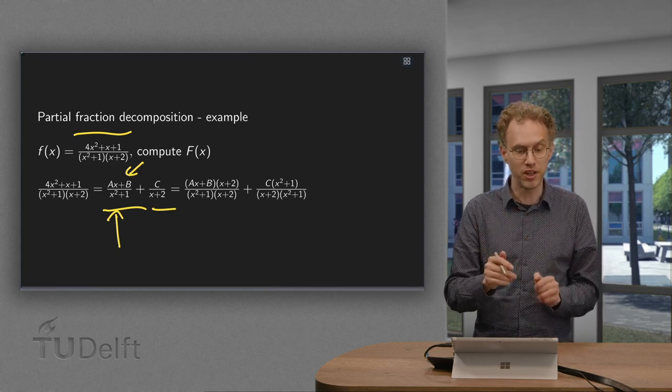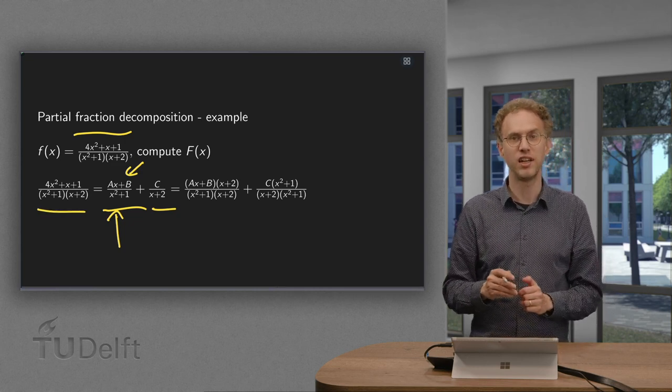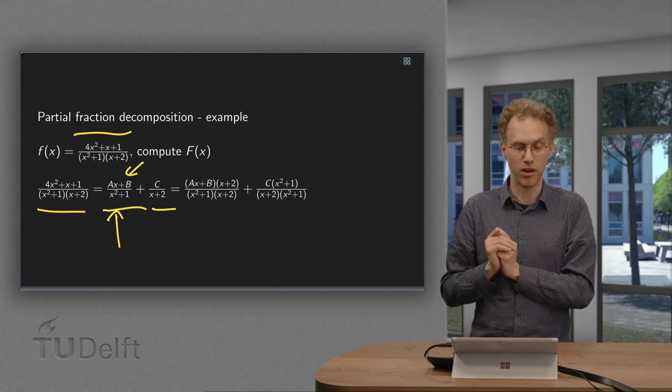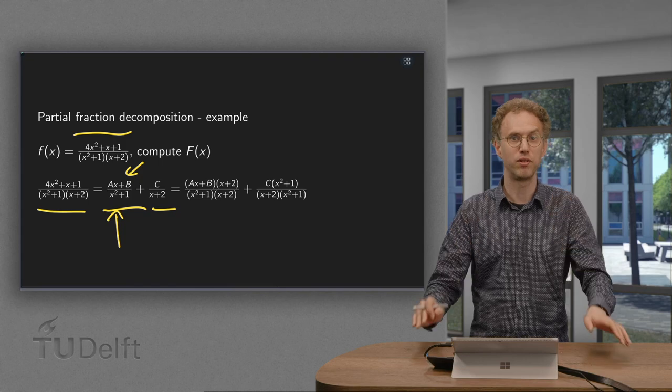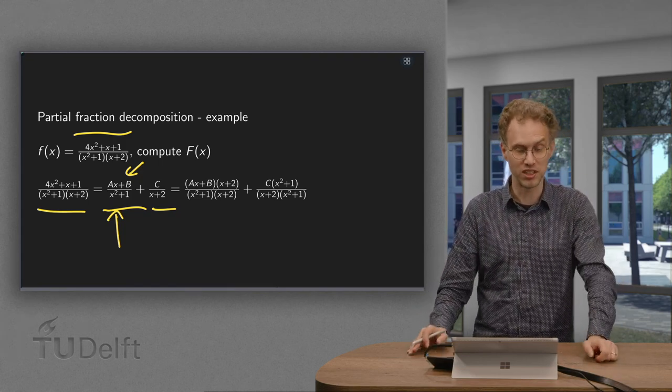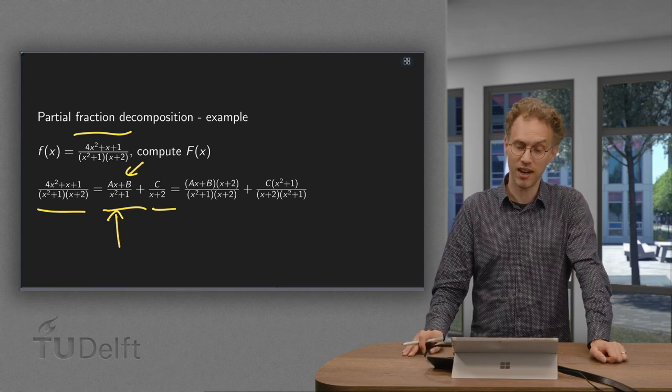So we want to rewrite our big fraction as ax plus b over x squared plus 1 plus c over x plus 2. So that will be our goal. And then we of course have to try to integrate those two terms which we are left.